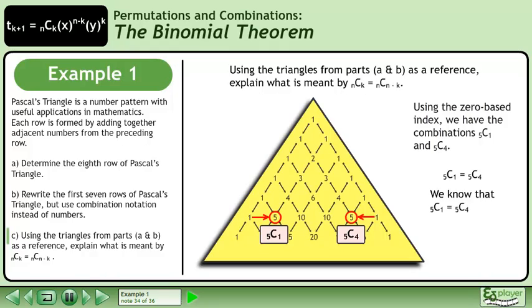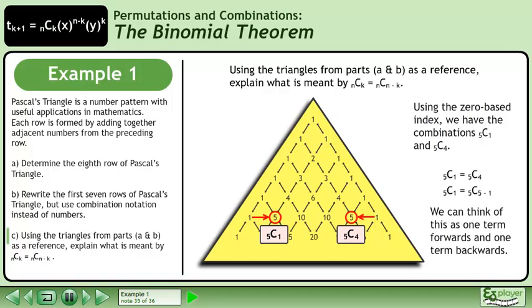We know that 5 choose 1 equals 5 choose 4. We can think of this as one term forwards and one term backwards, and we can generalize this as k terms forward and k terms backward.